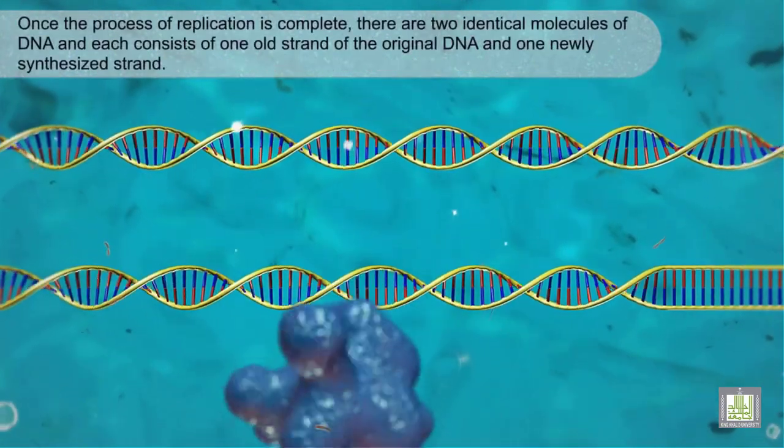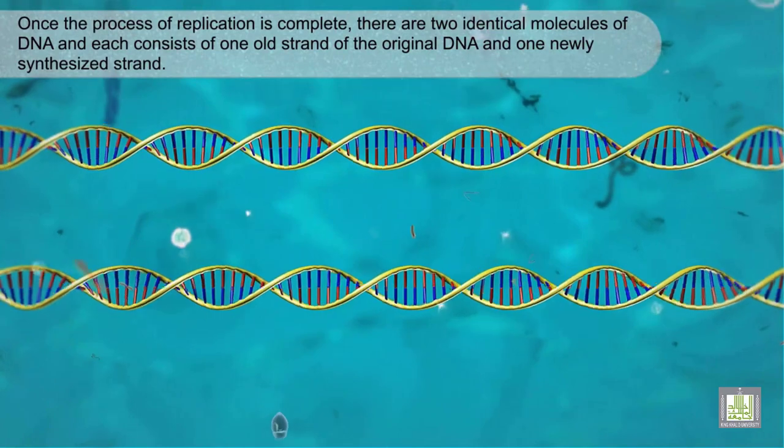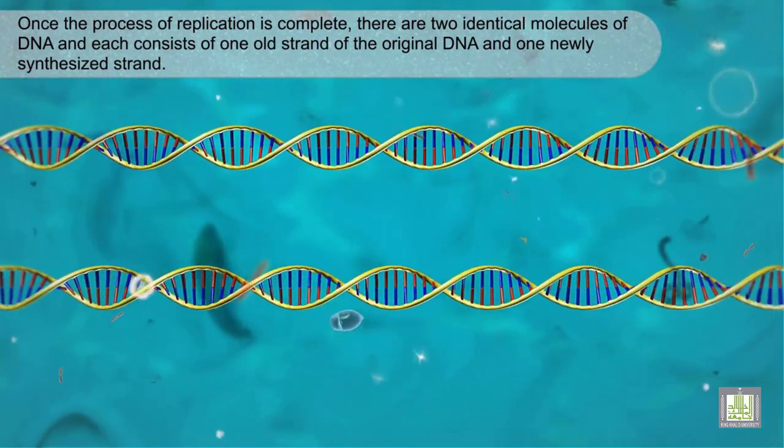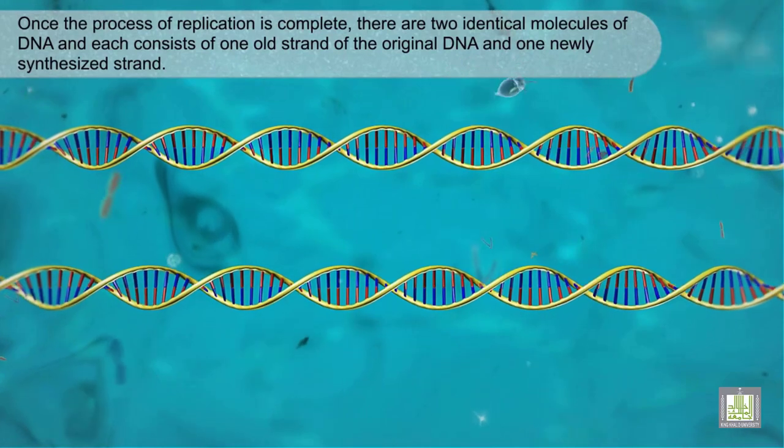Once the process of replication is complete, there are two identical molecules of DNA, and each consists of one old strand of the original DNA and one newly synthesized strand.